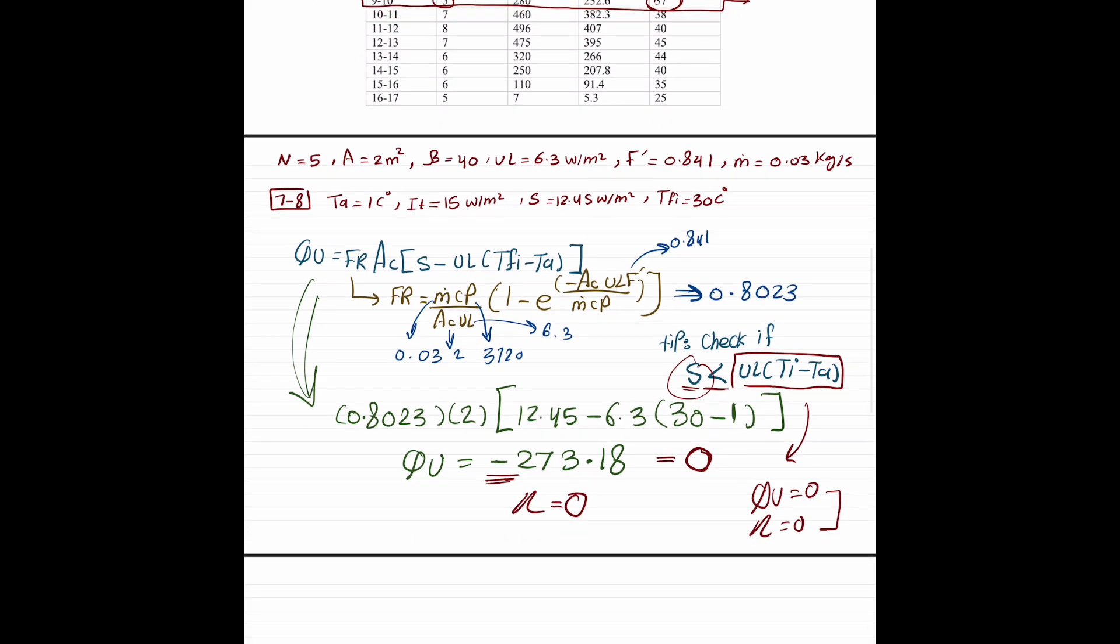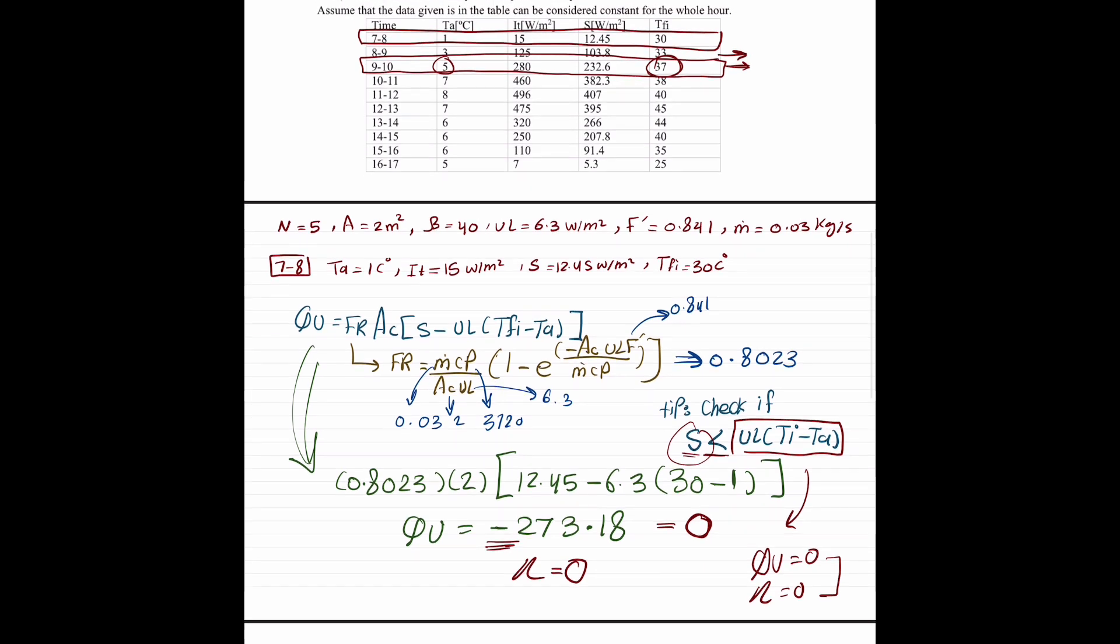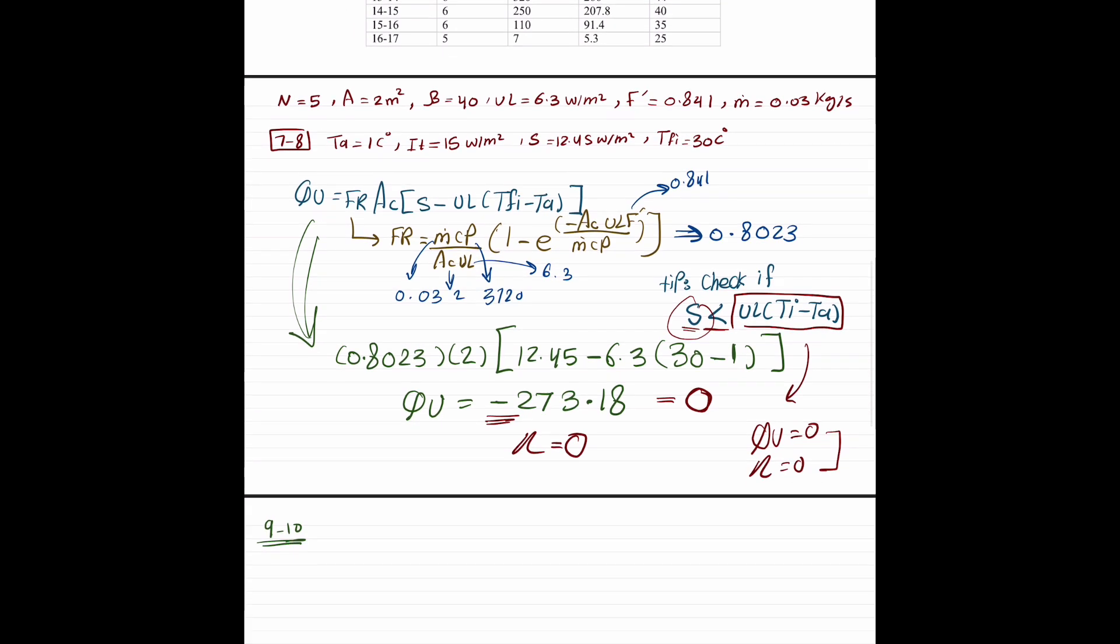First, let's check our rule. S is 232.6. 232.6. And let's check UL TFI minus T ambient.